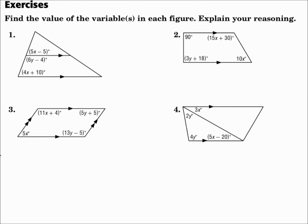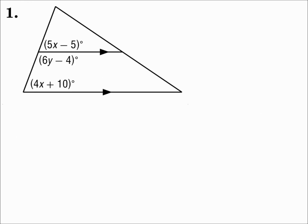Find the value of the variables in each figure. Explain your reasoning. In number one, we have a triangle that has a segment inside it that's parallel to the base. If you need to, extend the parallel lines and the transversal so that it looks more like two parallel lines cut by a transversal, and it sometimes makes your angle pairs easier to see.